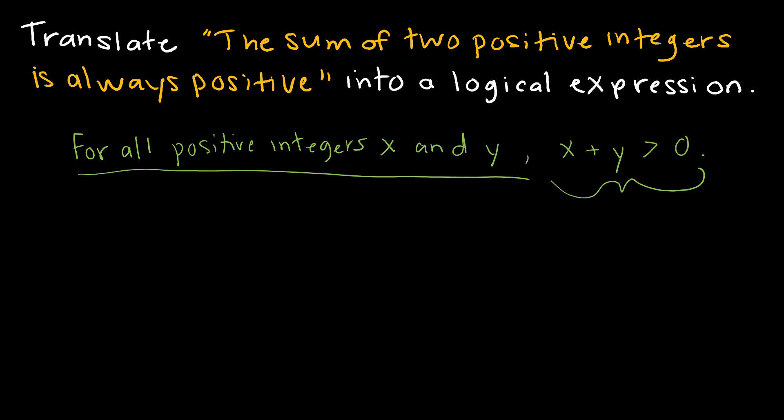So there's a couple of different ways that we might be able to translate this correctly and effectively. I might say for all x that belongs to the integers, for all y that belongs to the integers, if x is greater than 0 and y is greater than 0, then x plus y is greater than 0.